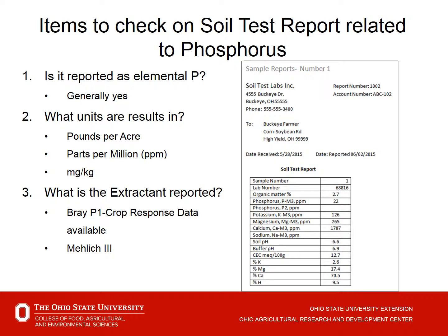The number two item is what units are being reported. Pounds per acre is one common designation. The other common designation is parts per million, or sometimes spelled out as milligrams per kilogram. These are two very different units and we want to understand the vast difference in those two numbers depending on what units are behind the value on the report.